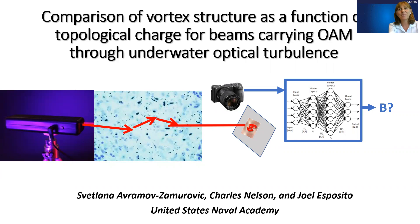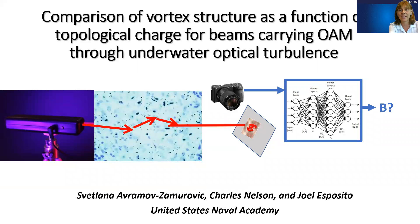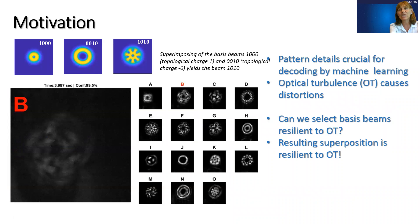In short, what we're trying to do is create a communication system that transmits messages through a complex environment. We record these symbols and use machine learning to process the images and decode the messages. Our work is motivated by the goal of creating an alphabet for a communication system that uses machine learning to decode the messages.